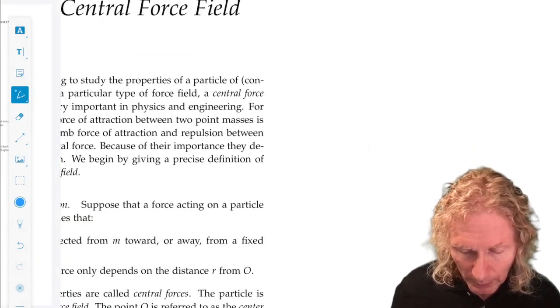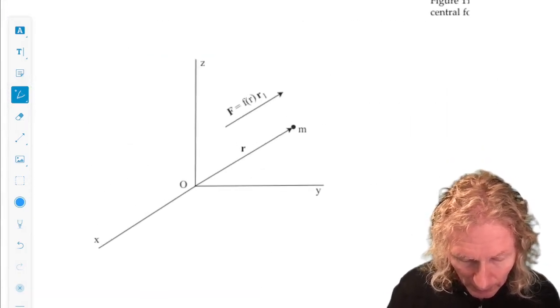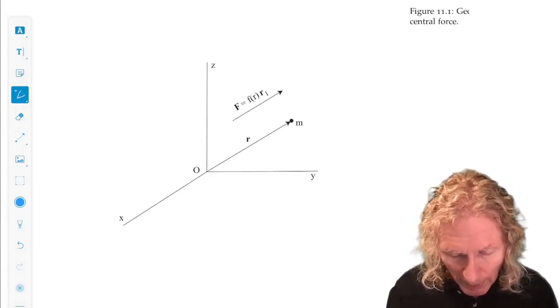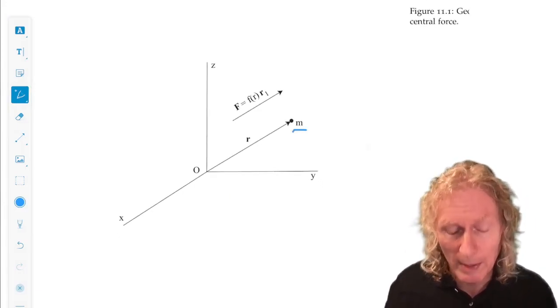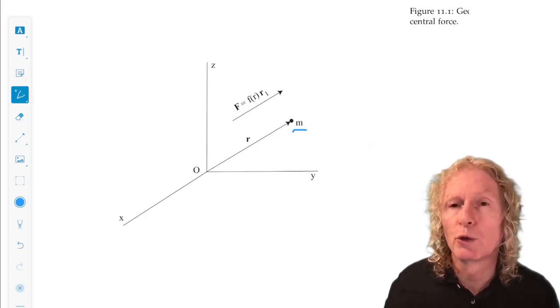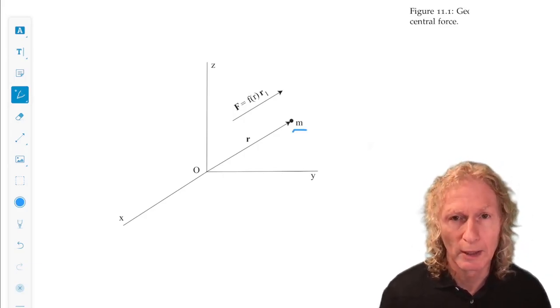So this is a little picture that makes that clear. We have our mass, particle of constant mass M, and the usual position vector R locating that mass.